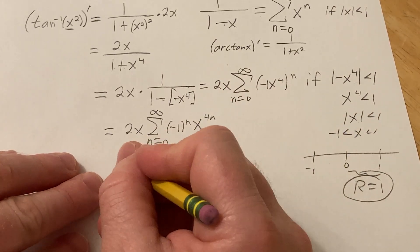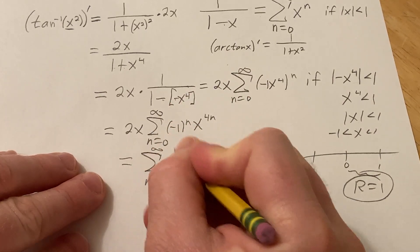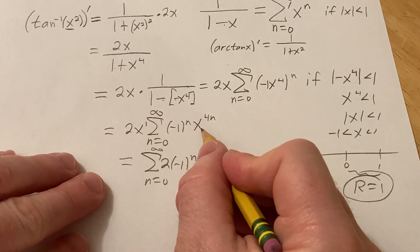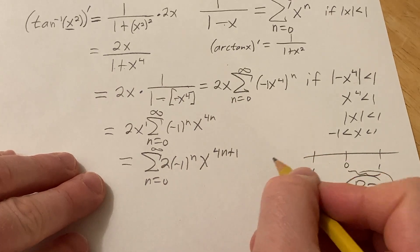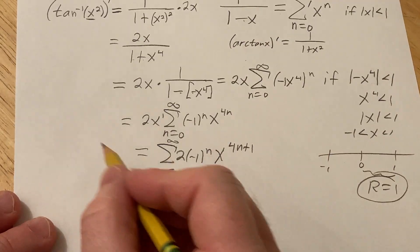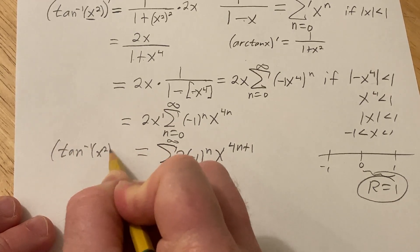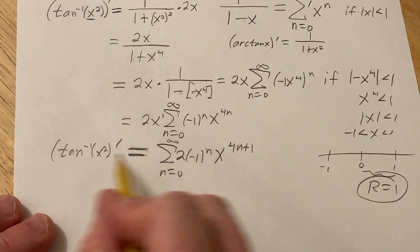Let's distribute this through. Infinite sum 0 to infinity, negative 1 to the n, I'll put the 2 here. There's an x to the 1 here, when you multiply it by this you add the exponents so it becomes x to the 4n plus 1.